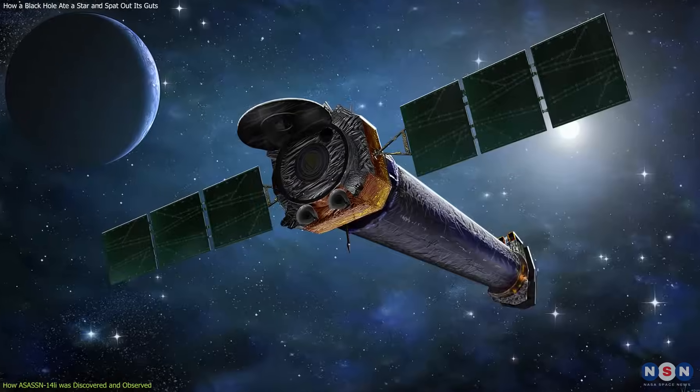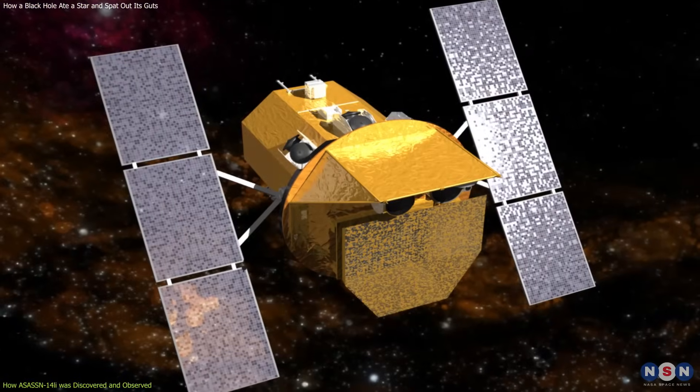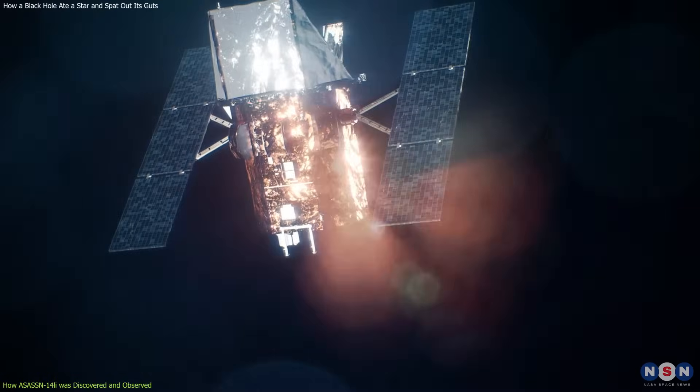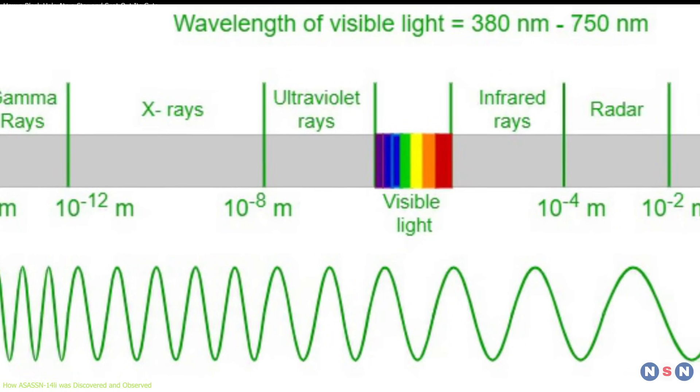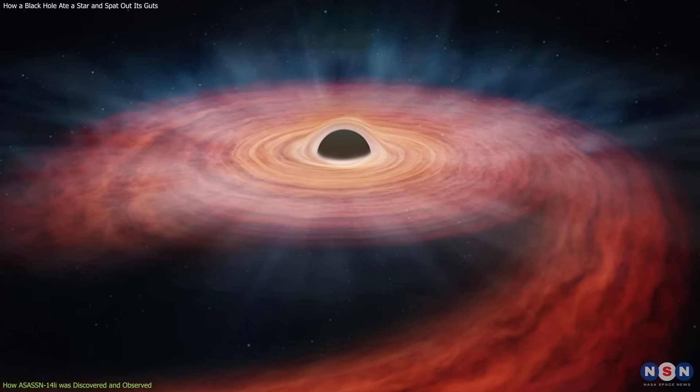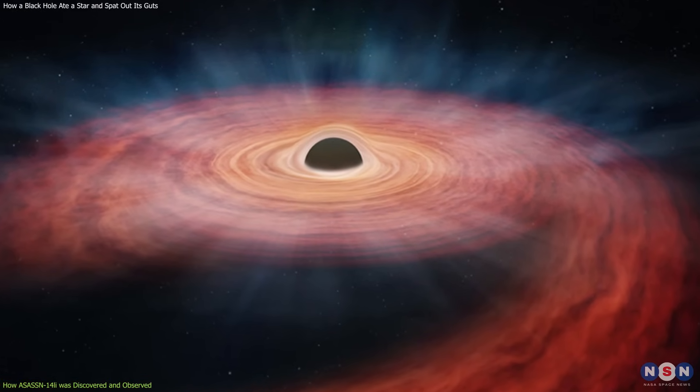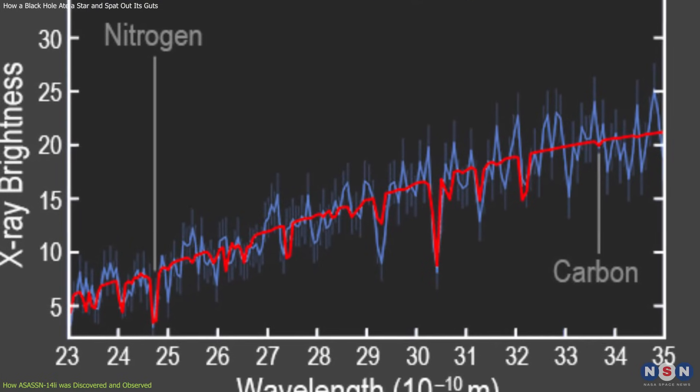These included NASA's Chandra X-ray Observatory, ESA's XMM-Newton, and NASA's Swift satellite. These telescopes observed this event in different wavelengths of light, such as X-rays, ultraviolet, optical, and infrared. They revealed how the black hole ripped apart the star and created an accretion disk around it, which emitted X-rays that were observed by the telescopes.